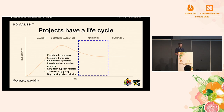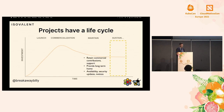In the maintaining phase, you need things like an established community with products, a conformance program, interdependency, and long-term support releases. This is when the project needs to continue and people need to be able to rely on it. Finally, in the sustain phase, we have things like making sure companies continue to support the upstream work, providing a long-term home for the project, and making sure security notices and updates continue for people still using the projects.